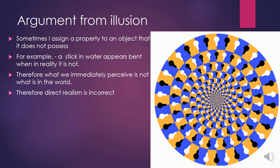The argument from illusion goes like this: Sometimes I assign a property to an object that it does not possess — for example, a stick in water appears bent when in reality it's not. I'm assigning movement to this spiral on the right, when in reality there is no movement. Therefore, what we immediately perceive is not what is in the world, and therefore direct realism and its claims are incorrect.